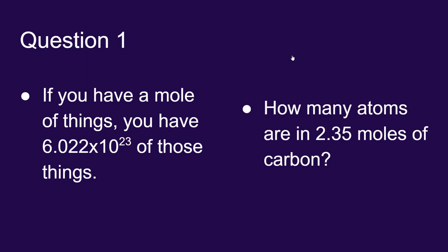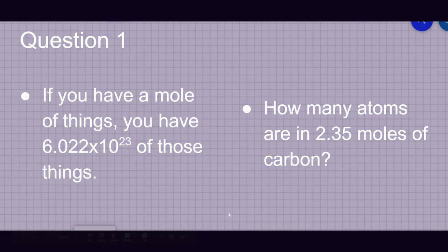So how many atoms are in 2.35 moles of carbon? This brings us back to the conversions done in chapter 2. We know that one mole is equivalent to 6.022 times 10 to the 23rd atoms.